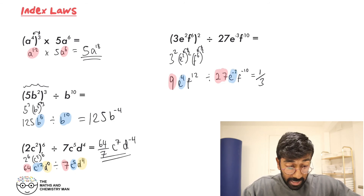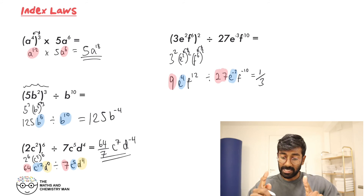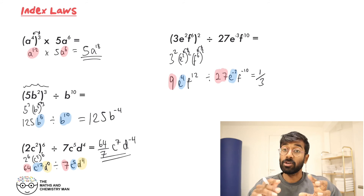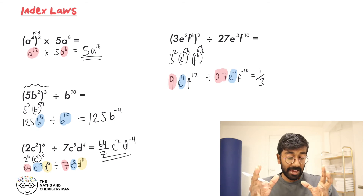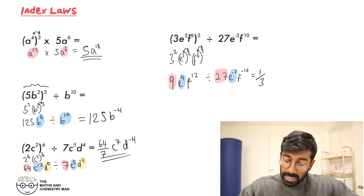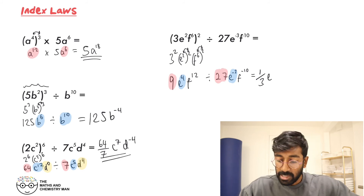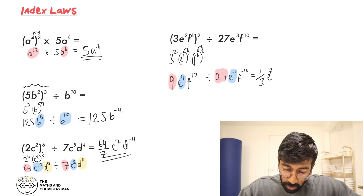Remember, when dividing we're subtracting the powers. Because there's a minus 3, be careful: that's 4 minus minus 3, which is actually 4 plus 3, so that's E to the power of 7.